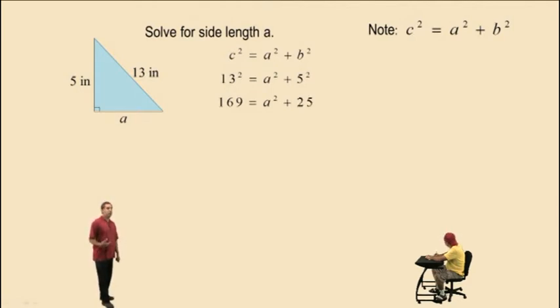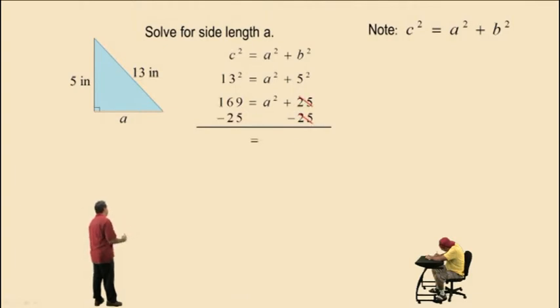Now we have to solve for that variable term, a squared. So we need to subtract 25 from both sides. 25 is cancelled on the right, leaving us with a squared on the right-hand side. And 169 subtract 25 is equal to 144. So a squared is equal to 144.